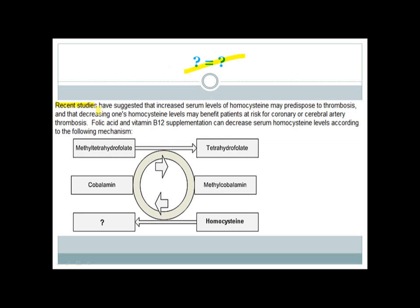Recent studies suggest that increased serum homocysteine predisposes to thrombosis, and decreasing homocysteine may benefit patients at risk of coronary or cerebral artery thrombosis. Folic acid and vitamin B12 supplementation can decrease serum homocysteine levels. The mechanism: methylcobalamin (B12) donates its methyl group to homocysteine, allowing homocysteine methyltransferase to convert homocysteine to methionine, thereby reducing homocysteine levels.